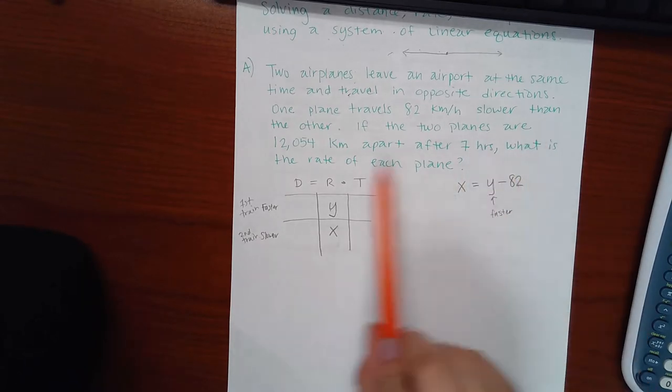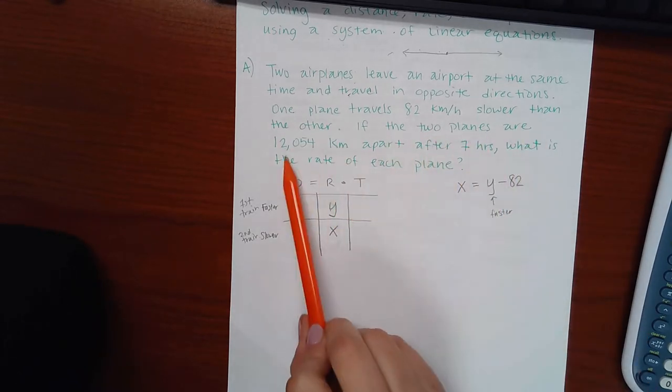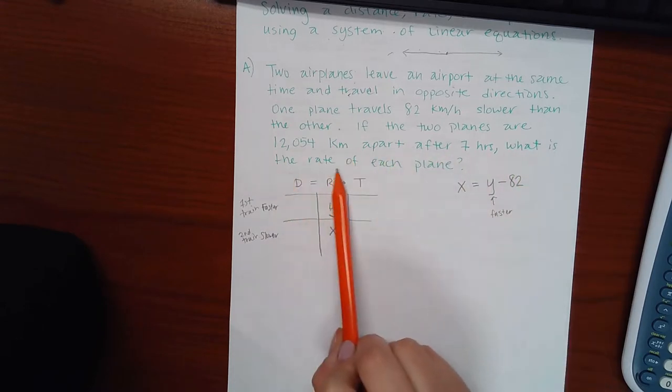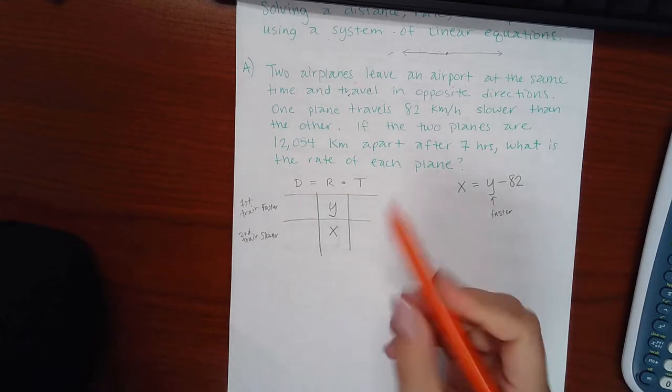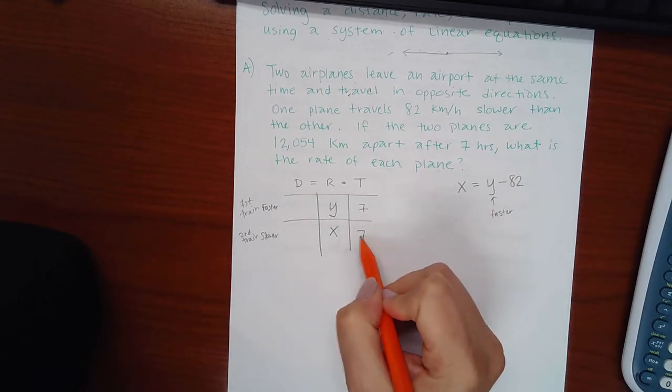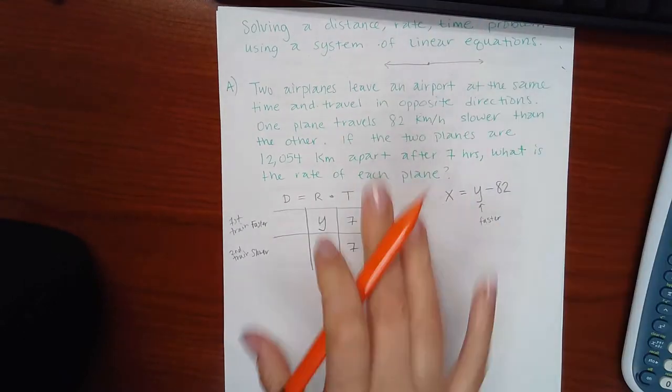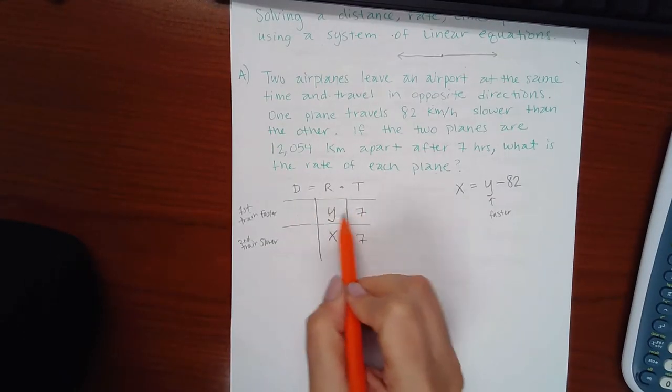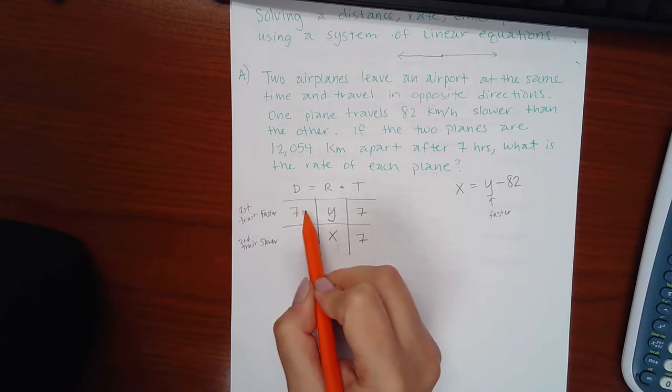So then now it says if the two planes are this many kilometers apart after seven hours, what is the rate of each plane? Okay? So then I know that the time is seven hours for each of them because they left at the same time. And then if I want to get the distance, all I have to do is the rate times the time, which means 7y for this one.